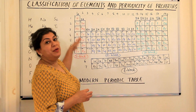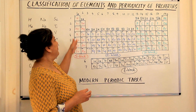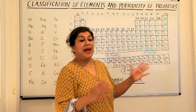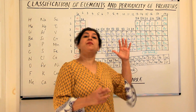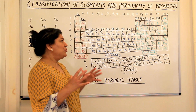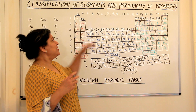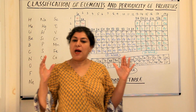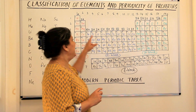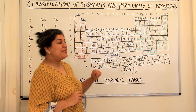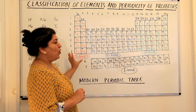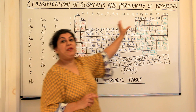Elements that have similar outer electronic configuration fall under each other in every group, and therefore they have properties similar to the preceding element in the same group. So if we know the first 20 elements, the first 20 elements give us an idea of the S block elements and the P block elements.